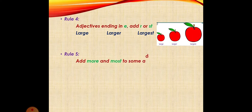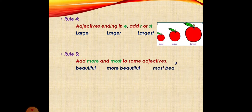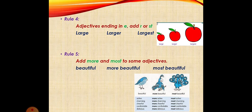And the last rule is: we use more and most to some adjectives. For example: beautiful, more beautiful, most beautiful; active, more active, most active; charming, more charming, most charming; delicious, more delicious, most delicious.